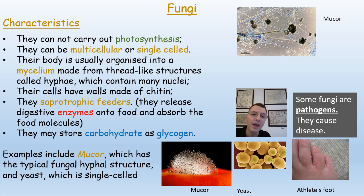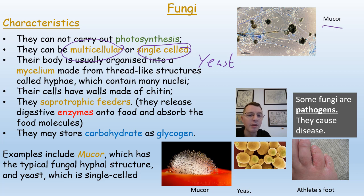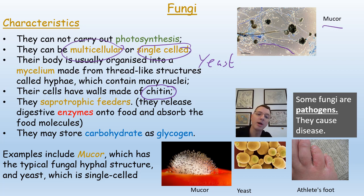Fungi cannot carry out photosynthesis - scientists once thought fungi might be plants, but they are not, so fungi have their own separate kingdom. Fungi can be either single-celled, for example yeast, or multicellular, for example Mucor. Their body is usually organized into a mycelium made from thread-like structures called hyphae. Most importantly, their cell walls are made of a substance called chitin. So if you have a single-celled or multicellular organism with a nucleus and a cell wall made of chitin, you know you have a fungus.